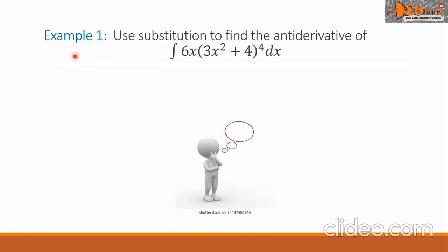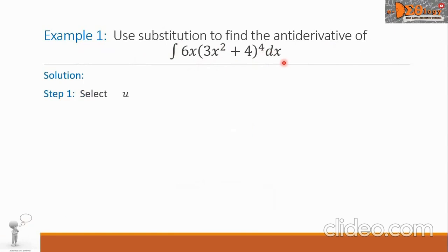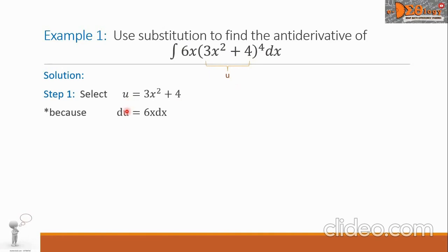This is Example 1. Use substitution to find the anti-derivative of the integral of 6x times the quantity 3x squared plus 4, raised to the 4th power, dx. For our solution, step 1 is to select u. Let us select 3x squared plus 4 as u, and take the derivative: du equals 6x dx.